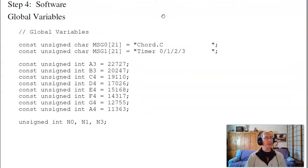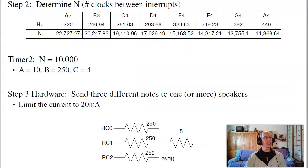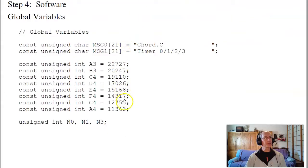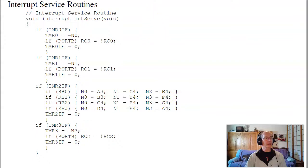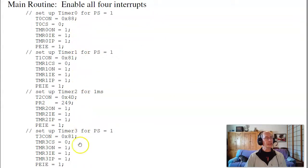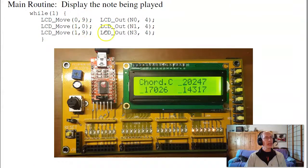In terms of software, I want to set up four different interrupts running at the same time. This is a set of constants defining A3 to A4 — the number of clocks between interrupts from the table set up before. Inside the interrupt service routine, I've got four interrupts running. If timer 0 kicks in, I set timer 0 equal to global variable N0, and if any button is pushed, toggle RC0. Timer 1 toggles RC1. Timer 3 toggles RC2. Timer 2 watches the push buttons — every millisecond it checks which button is being pushed and sets N0, N1, and N3 accordingly. Each of these has to be turned on for prescaler 0. Then the main routine just displays what's happening.